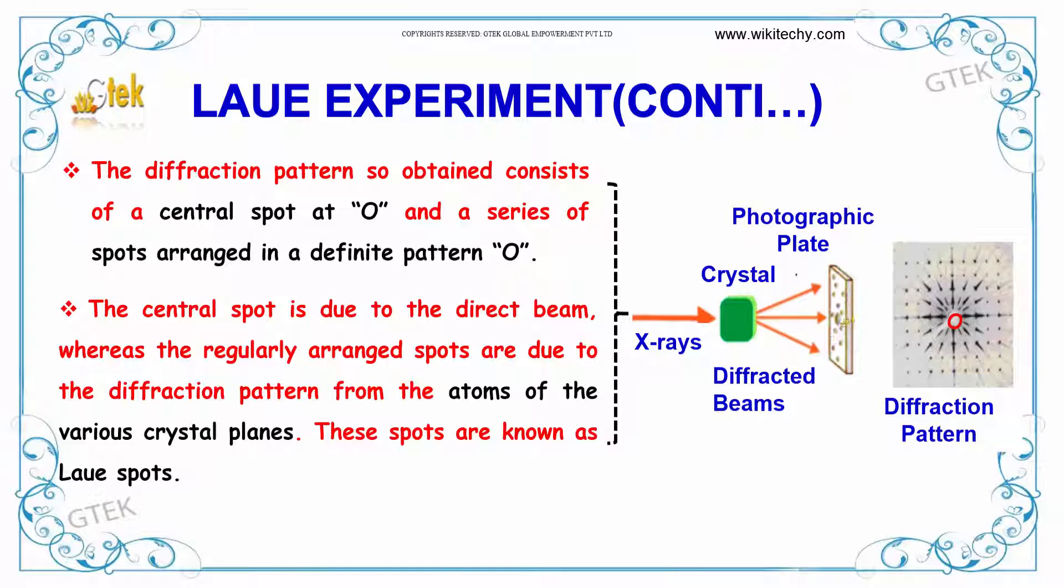The central spot is due to the direct beam, whereas the regularly arranged spots are due to diffraction from the atoms of the various crystal planes. These spots are known as Laue spots.